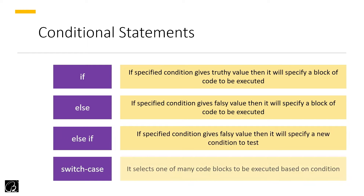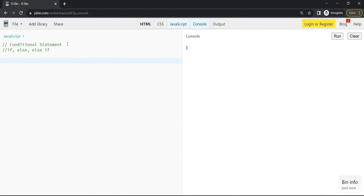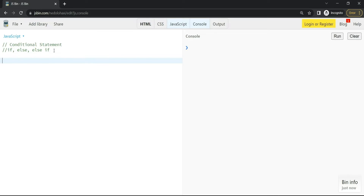Then we have switch-case, which selects one of many code blocks to be executed based on a condition. In this video I will talk about the first three statements. You don't have to worry about remembering all this — we'll understand through examples and it is very simple. So I'm back to JSBin and we'll be talking about conditional statements. if, else, and else-if are all keywords.